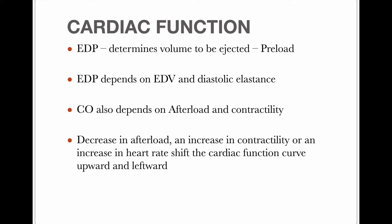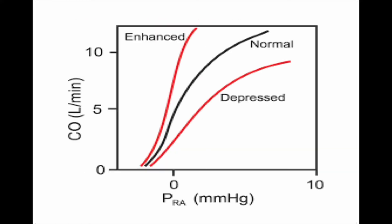End-diastolic pressure depends on end-diastolic volume and end-diastolic elastance. If the elastance of the heart is lower, there will be lower ejection. Cardiac output also depends on afterload and contractility of the heart. Decrease in afterload, or increase in contractility or heart rate, will shift the cardiac function curve upward and leftward. On the graph, the x-axis is right atrial pressure (RAP) and y-axis is cardiac output. If RAP is lower, venous return and cardiac output are higher; if RAP is higher, venous return and cardiac output are reduced.